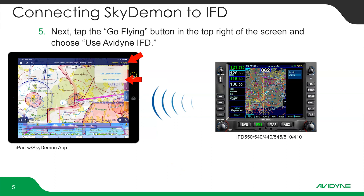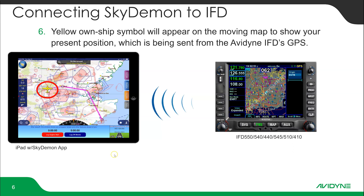Once that's on, go to the Go Flying button in the upper right of the screen and select Use Avidyne IFD. As soon as you do that, you'll get a GPS position reporting back to your iPad — to SkyDemon — showing your own ship position. I happen to be sitting on the ground here at Wickham, and now it's reporting back a GPS position to the iPad. You know they're communicating.